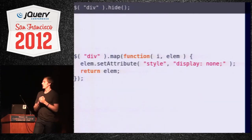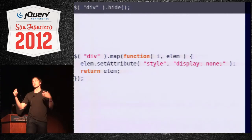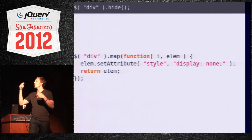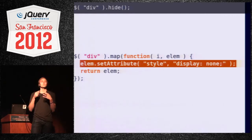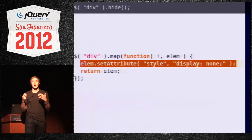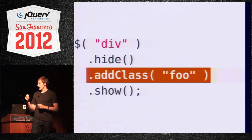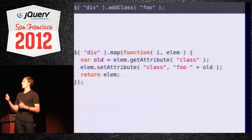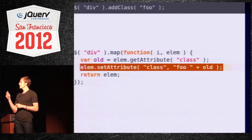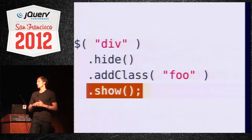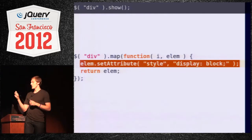Let's look at a naive underlying implementation of each of these. Hide: it's a big loop over all the elements selected from the DOM — all the divs — and the key bit is that the underlying DOM element is being manipulated. Add class: again, another loop that alters all the DOM elements in the set. Show: very similar to hide — big loop, DOM element alterations.